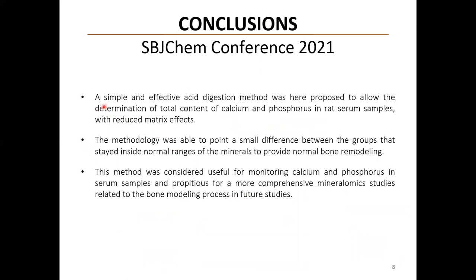In conclusion, a simple and effective acid digestion method was proposed here to allow the determination of total content of calcium and phosphorus in rat serum samples with reduced matrix effects. The methodology was able to point to a small difference between the groups that stayed inside normal ranges of the minerals to provide normal bone remodeling. This method was considered useful for monitoring calcium and phosphorus in serum samples and propitious for more comprehensive mineralomics studies related to the bone modeling process in future studies.